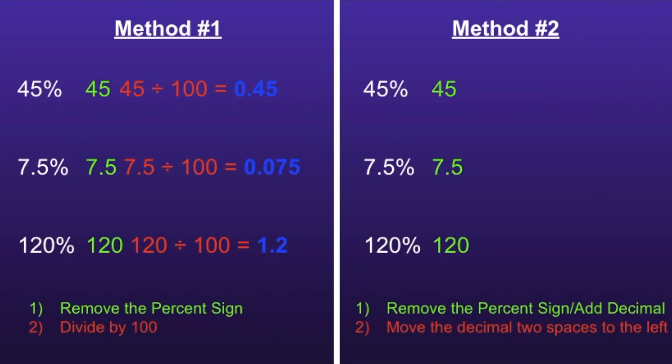You can see the 7.5 already has a decimal, but we do need to add a decimal to both the 45 and the 120. Now we can move on to step number 2.